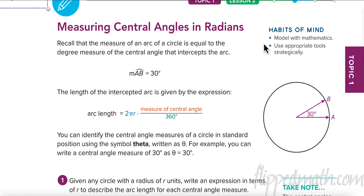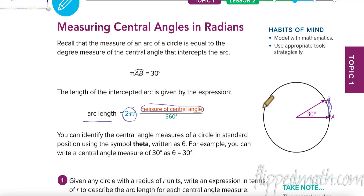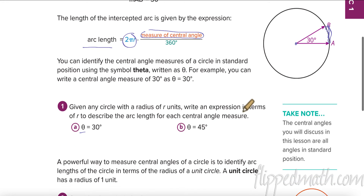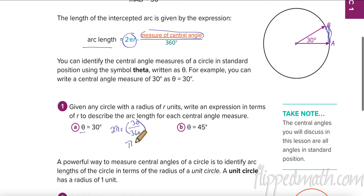Let's go back to geometry. We need to remember that the arc of a circle is just part of the circle. Arc length equals the entire circumference 2πr, multiplied by whatever portion of the central angle we're using — that's theta, the Greek letter for the central angle — divided by 360. For example, with a 30-degree angle: 2πr × 30/360 = πr over 6. For 45 degrees: 2 × 45 over 360 gives πr over 4.